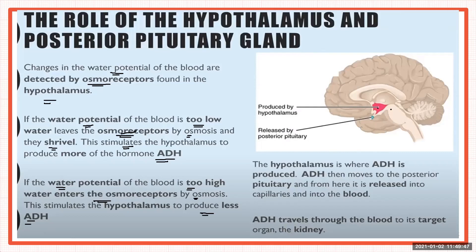The hypothalamus is where antidiuretic hormone is produced. This hormone then moves to the posterior pituitary gland, which releases it into the capillaries and then into the blood. From there it travels to the final target organ — the kidney. This is how the hypothalamus and posterior pituitary gland work together in coordinating osmoregulation.